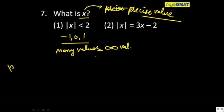We will look at second statement alone. Mod of x is always to be written as either x or simple. So let's write x equals 3x minus 2.